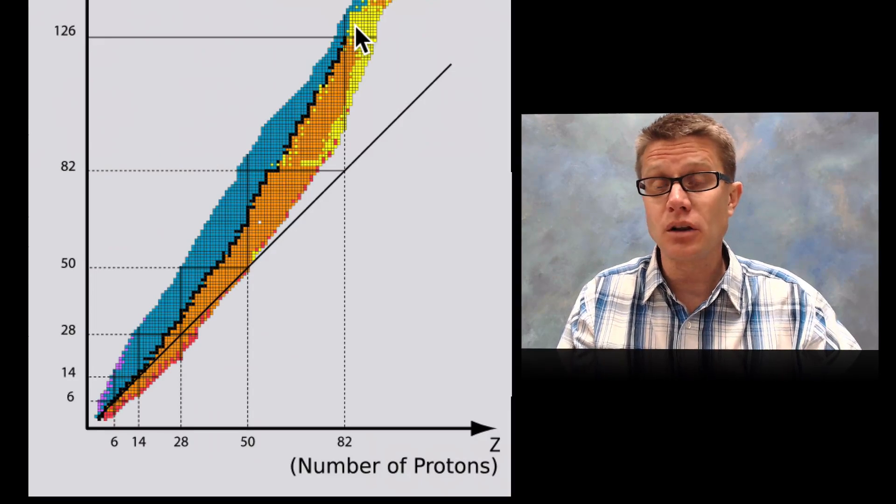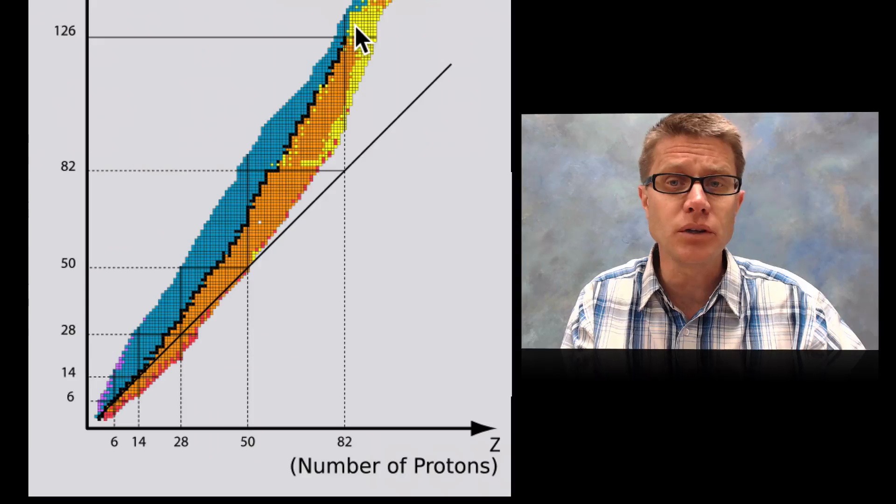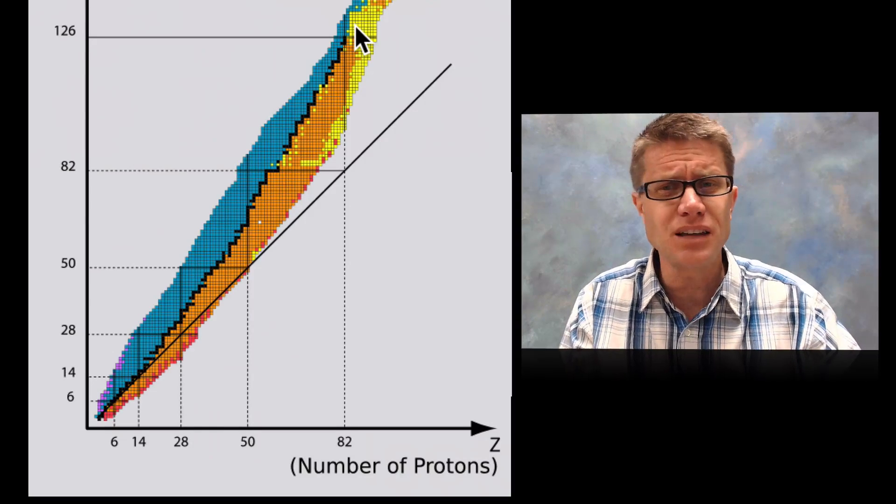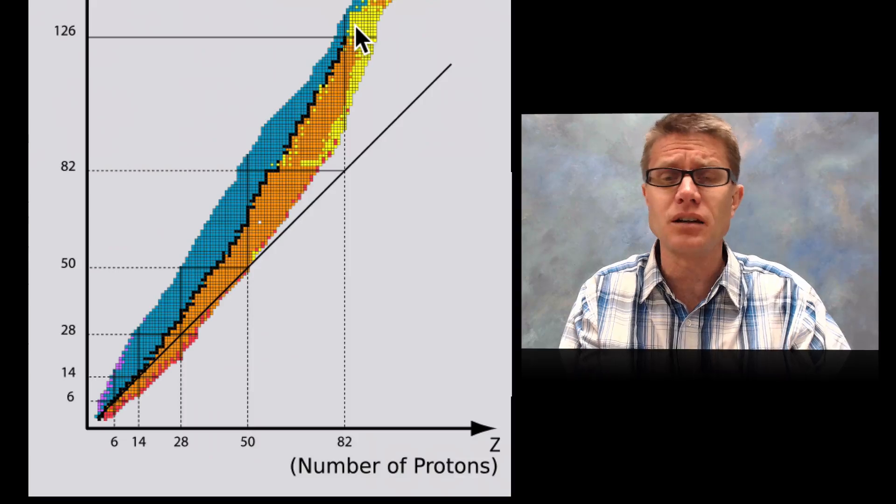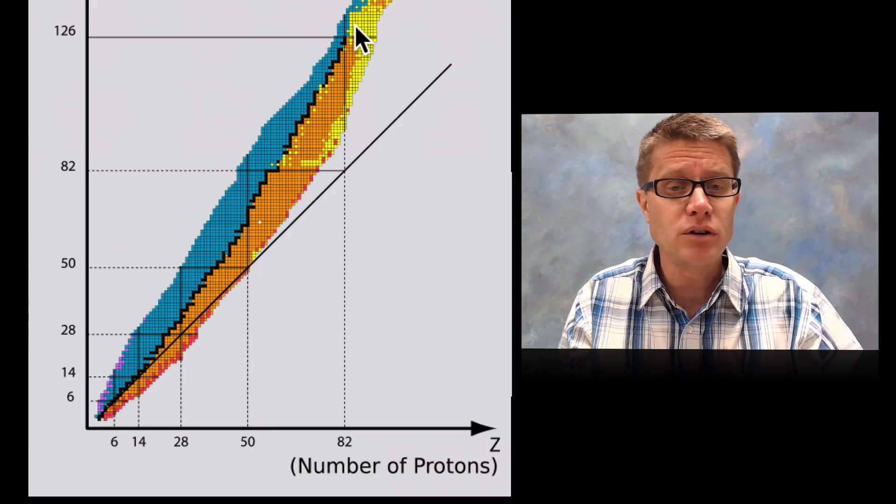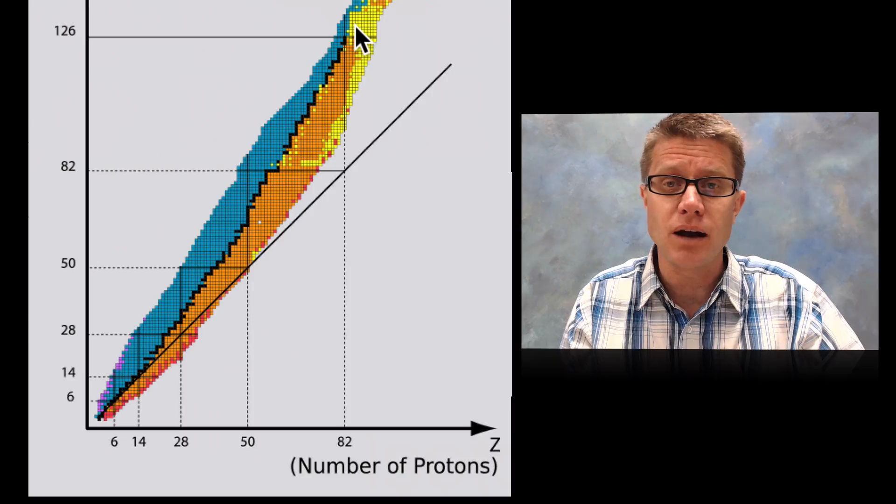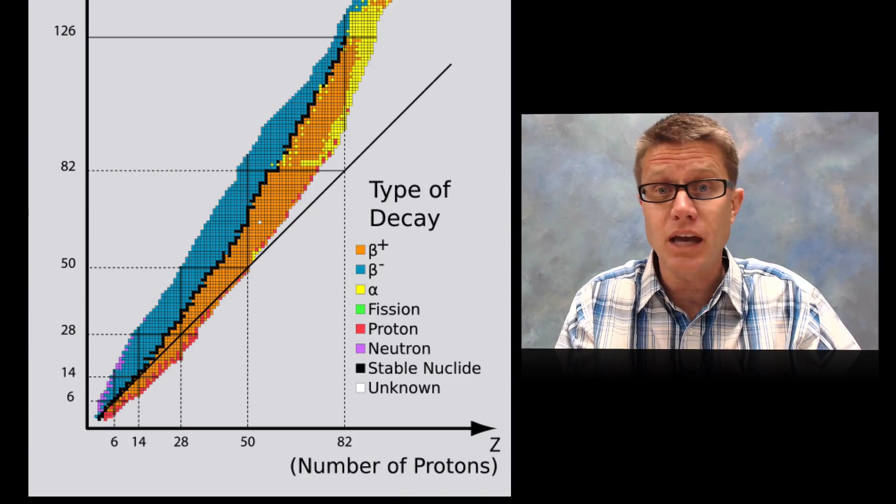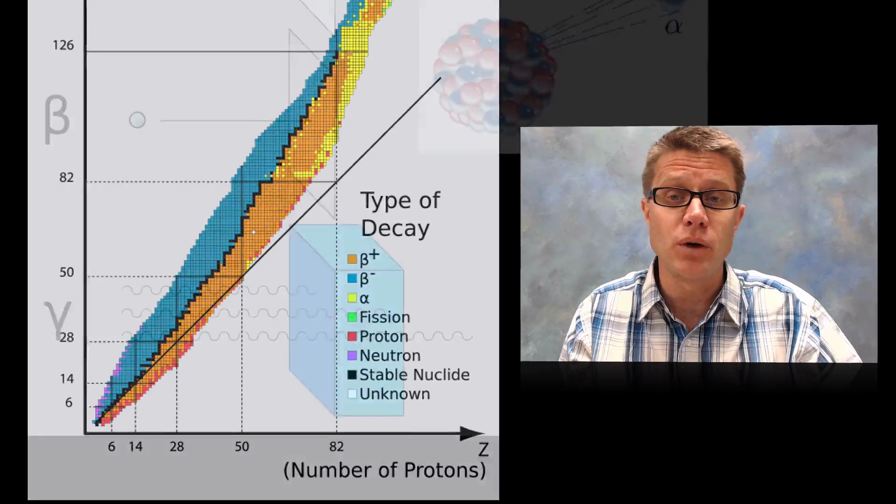As our atoms get larger and larger and larger and as our atomic nucleus gets larger and larger and larger, you have to have more neutrons to maintain the stability of the atomic nucleus. And we will talk about that in later videos. But what you create and what the colors on this graph are, are different types of decay or isotopes breaking down or they are giving off what is called radiation.